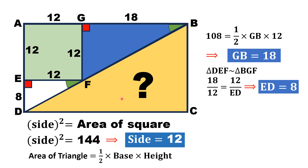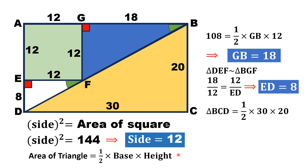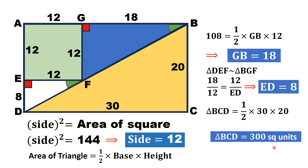Now we come to the area of this yellow shaded triangle. Since DC length is equal to AB length, AB is 12 plus 18, that is 30 cm. Using the formula for the area of a triangle and substituting the base and height values of the yellow triangle, we get area equals half times 30 times 20, which equals 300 square units. That is the answer.